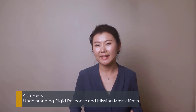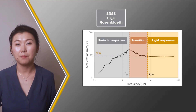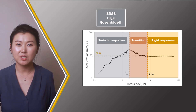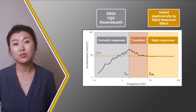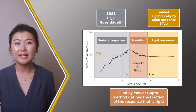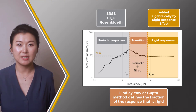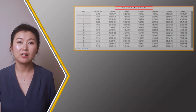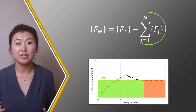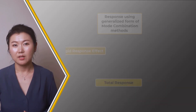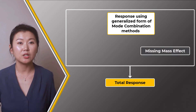Let's summarize what we learned in this video. Generally speaking, mode combination methods such as SRSS, CQC, and Rosenblues are intended for periodic response, where modal responses are out of phase with each other. The rigid response effect algebraically sums those modes in the high frequency range instead of using the mentioned mode combination methods. In the transition region, either the Lindley-U or Gupta method defines a fraction of the modal response that is rigid. Although extracted modes can cover the frequency range of interest, they may not have enough effective mass, so the missing mass method provides a technique to account for inertia forces of the mass not included in the modes. Either or both rigid responses and missing mass effects can be included in a response spectrum analysis. I hope you found this video informative. Thank you for watching, and do check out courses.ansys.com for more useful learning resources.